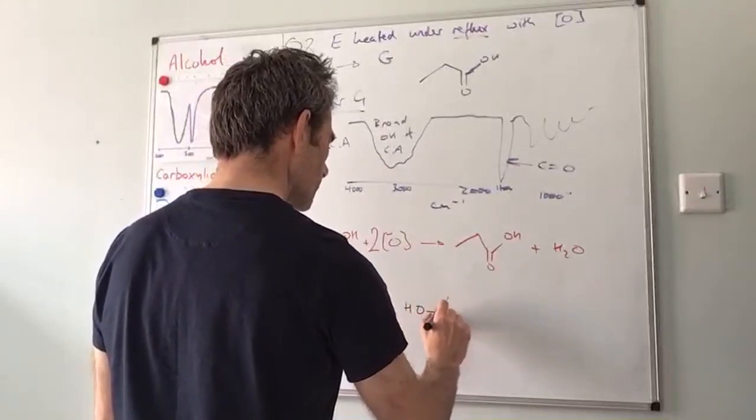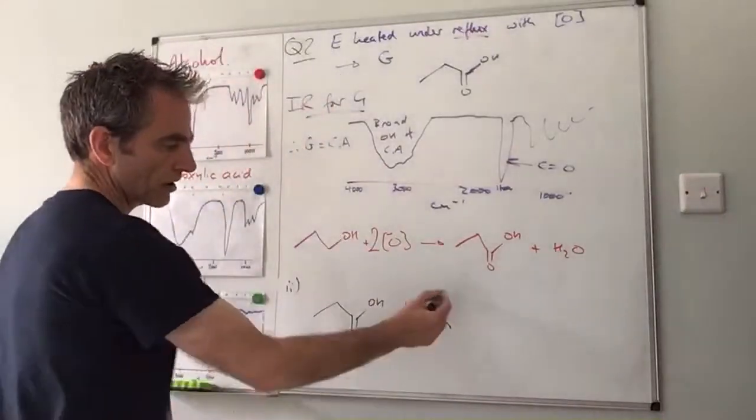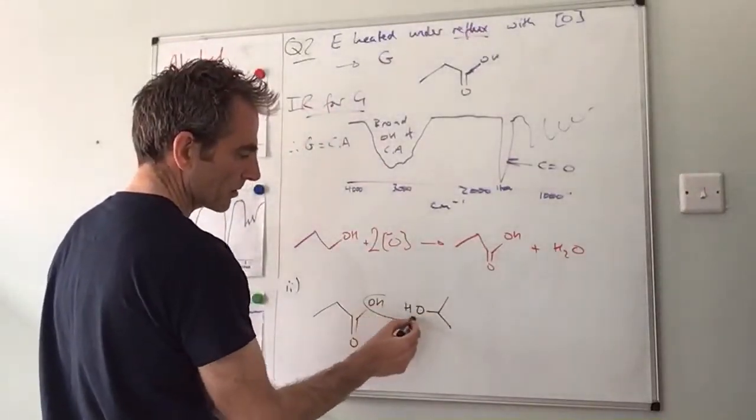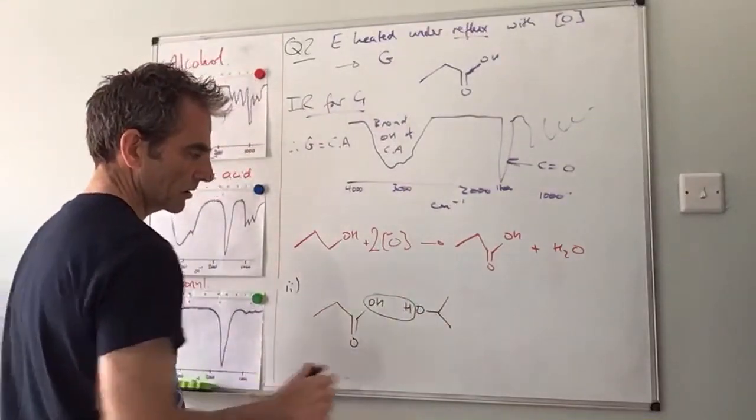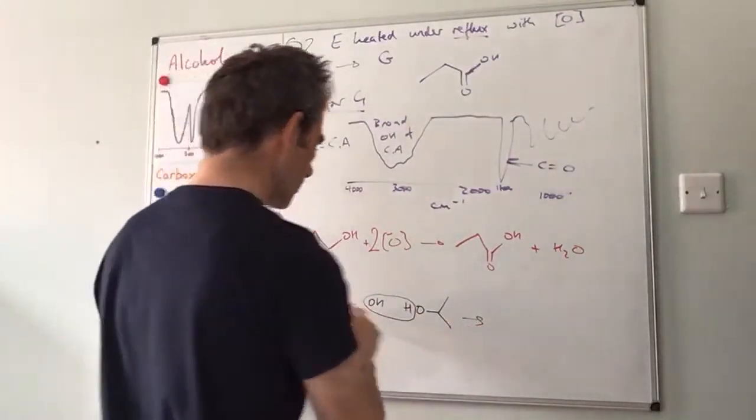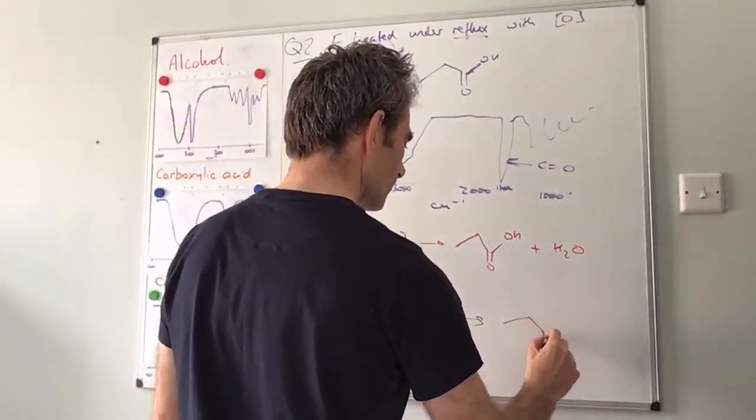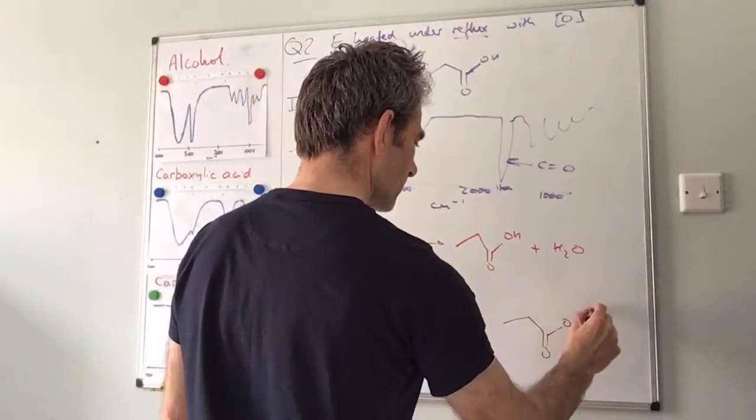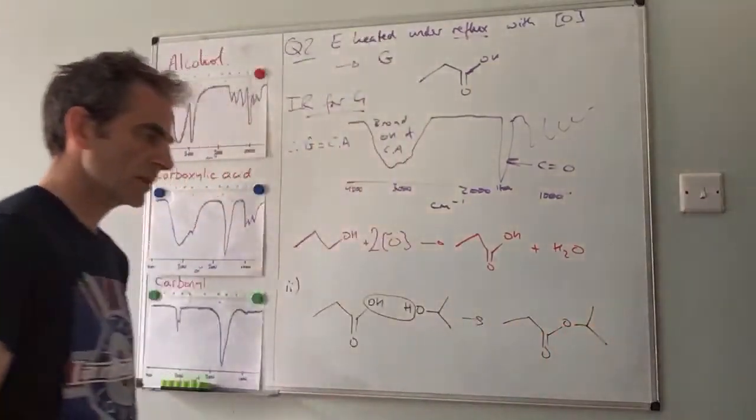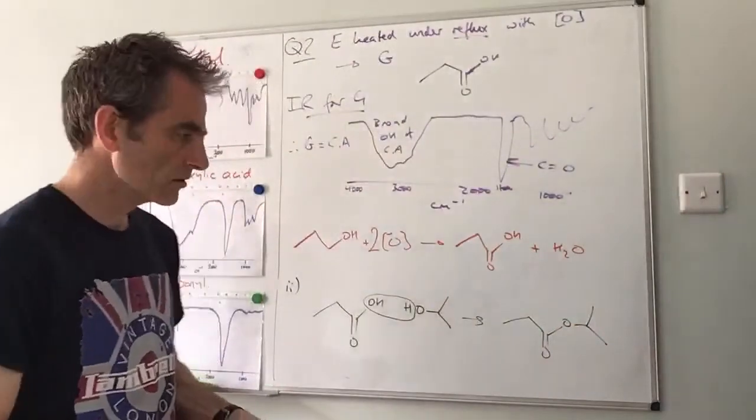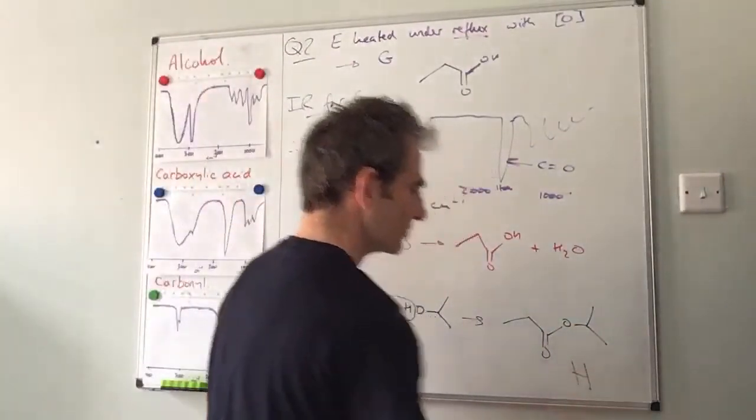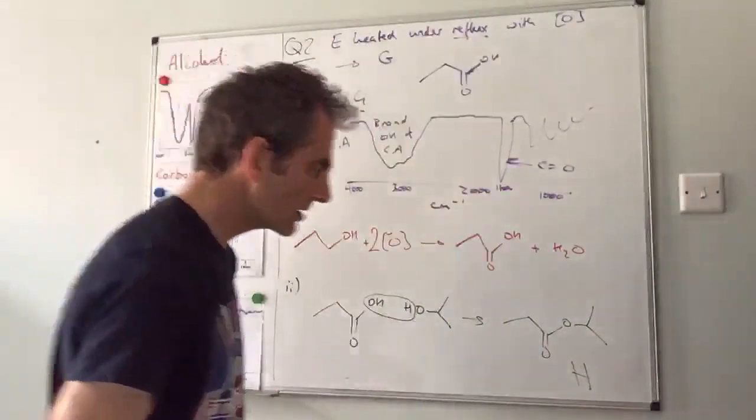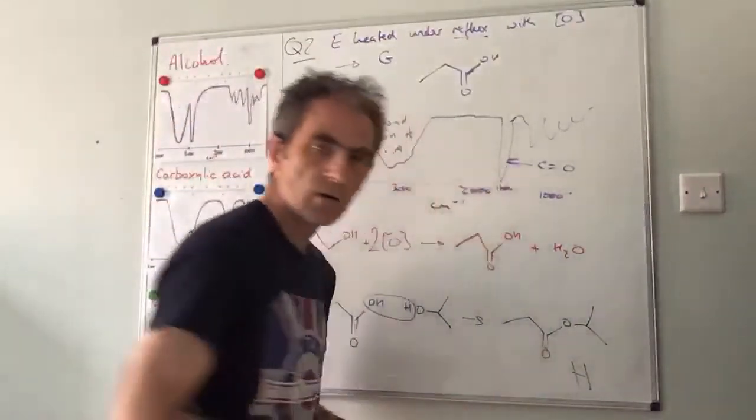So remember F was the secondary alcohol, so I'm drawing it that way. I'm going to lasso out the water molecule and I'm going to create the product, which was an ester, which looks like that. I didn't want the equation, I just wanted the structure, so that was H. But that was the homework.